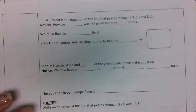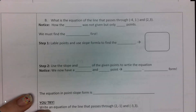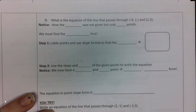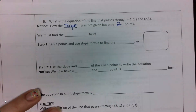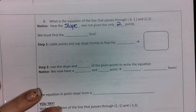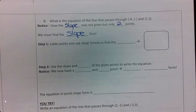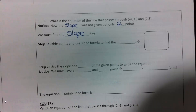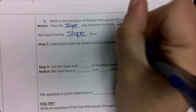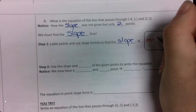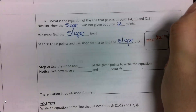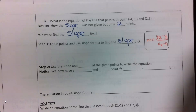On the back side, I want to find the equation of the line that passes through negative 4, 1 and 2, 3. This one does not give me the slope, but it gives me two points. So I need to find the slope first. I'm going to label my points and use the slope formula: m equals y sub 2 minus y sub 1 over x sub 2 minus x sub 1.